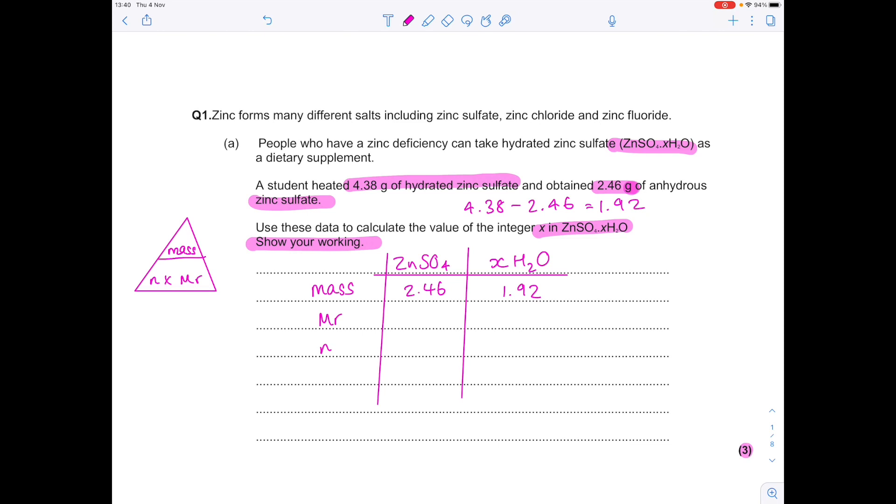So zinc has a mass of 65, sulfur 32, oxygen 16, which I need to multiply by 4 because of this 4 here. So zinc sulfate's MR is 161. What about water? We need to do 2 lots of hydrogen, so 2 times 1 plus 16 from oxygen to get 18. To find the number of moles, we do mass divided by MR. So that's 2.46 divided by 161 to get 0.01527. For water, we do 1.92 divided by 18 to get 0.106 recurring.